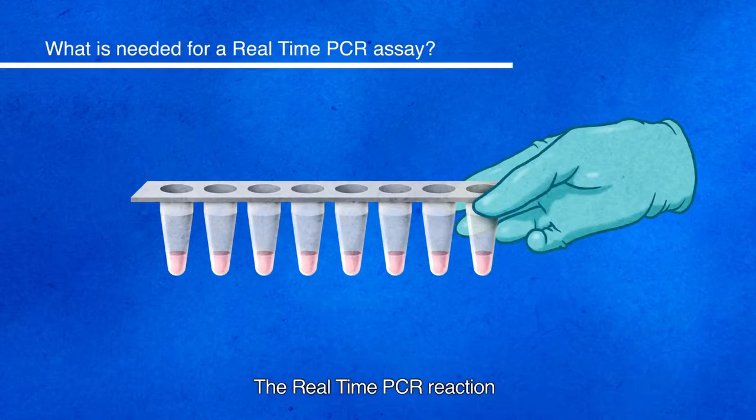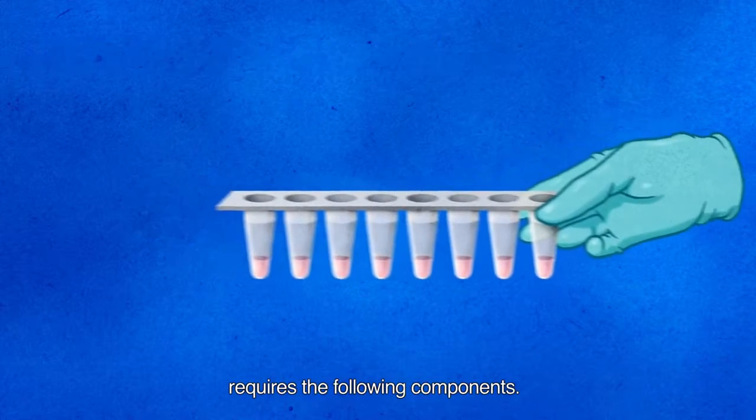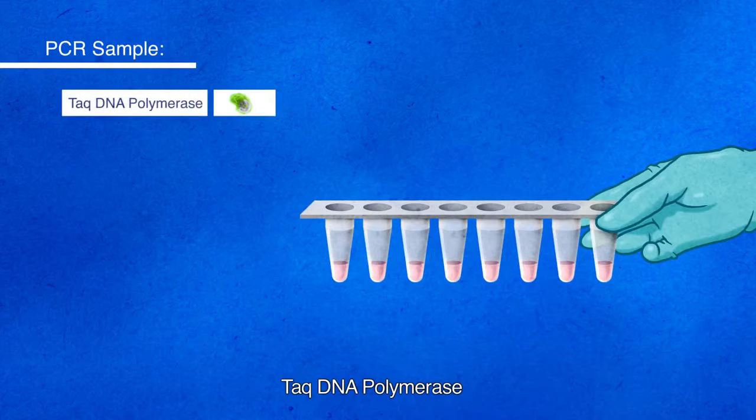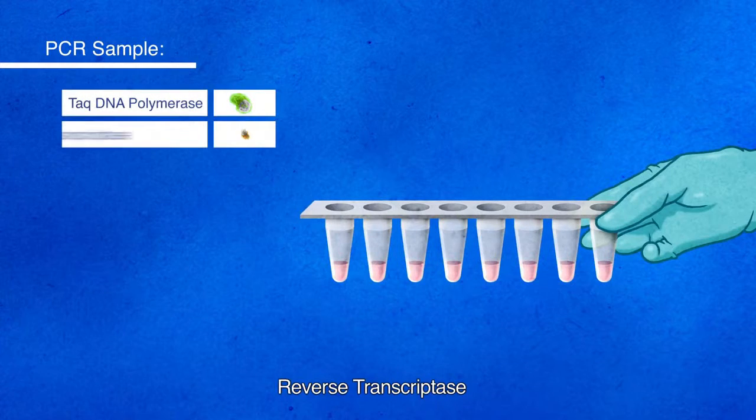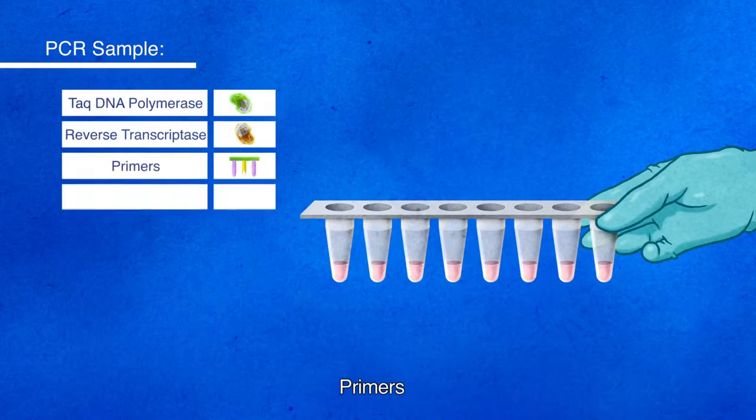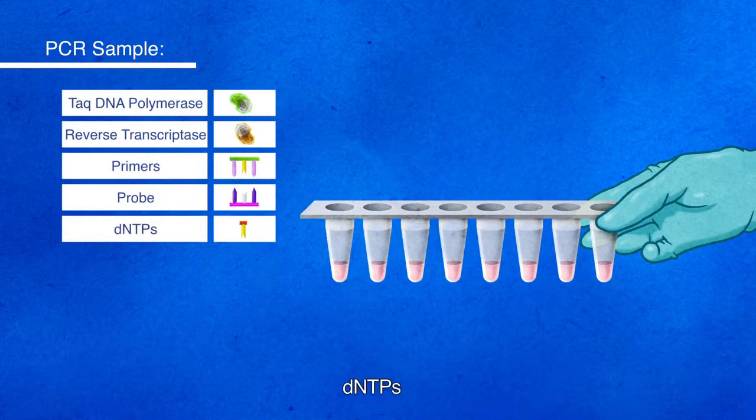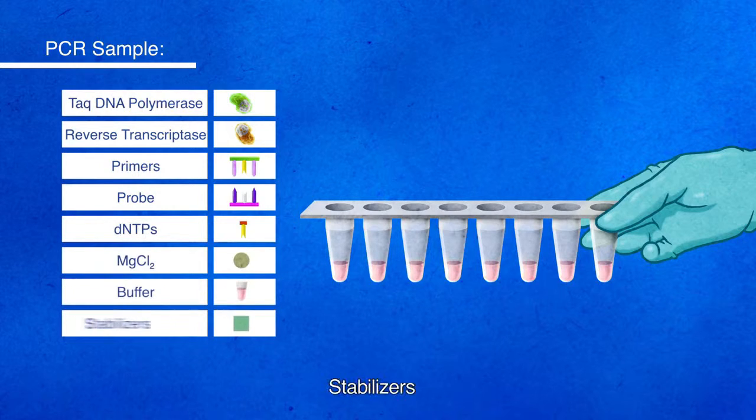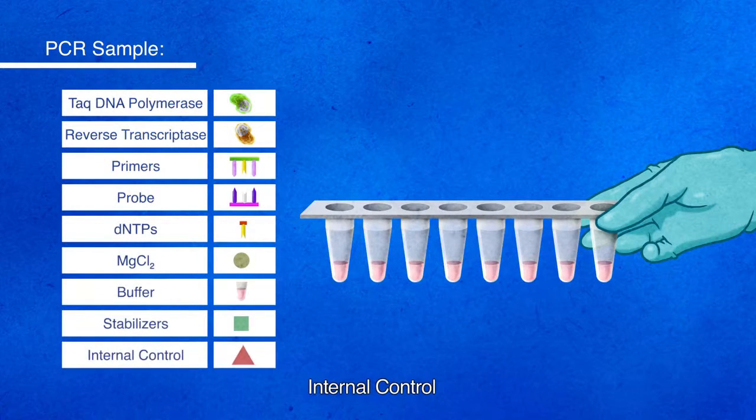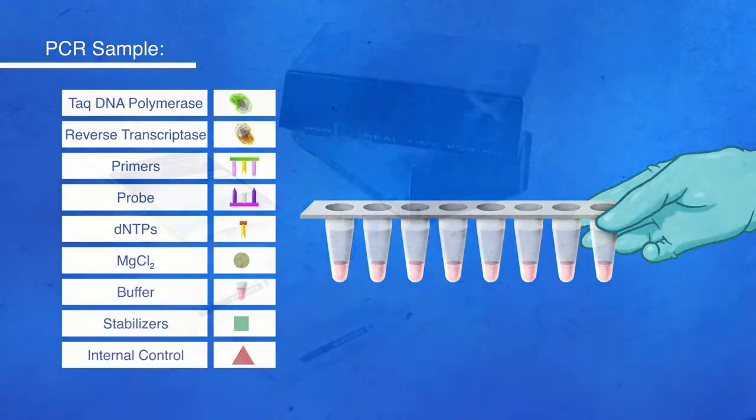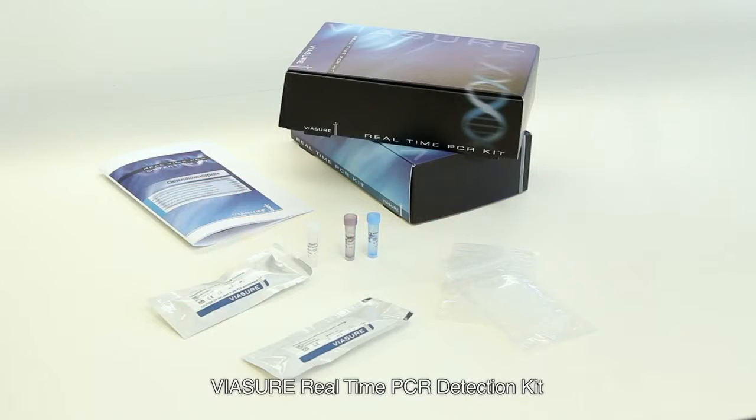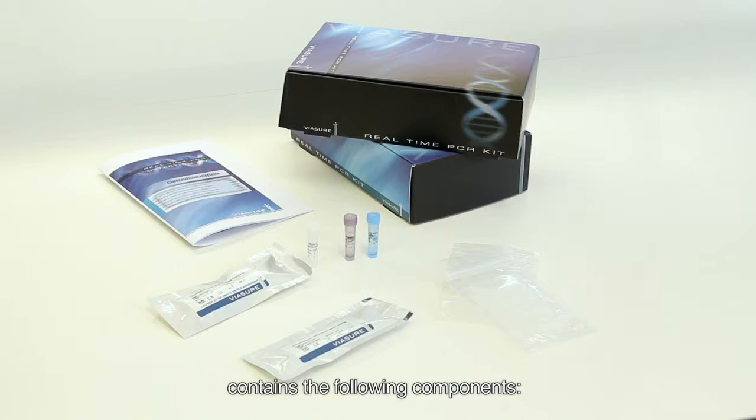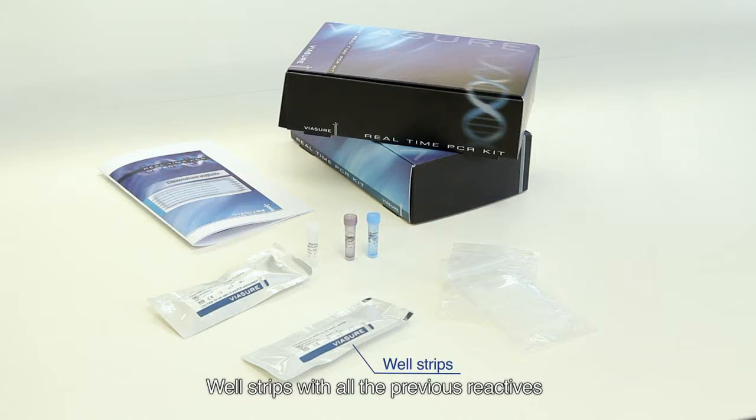The real-time PCR reaction requires the following components. The real-time PCR detection kit contains well-strips with all the reactives in a stabilized format.